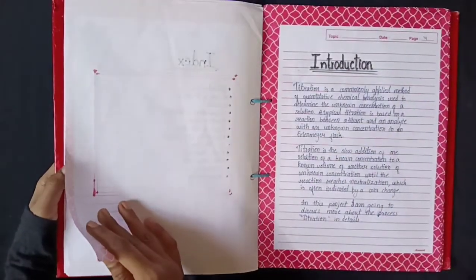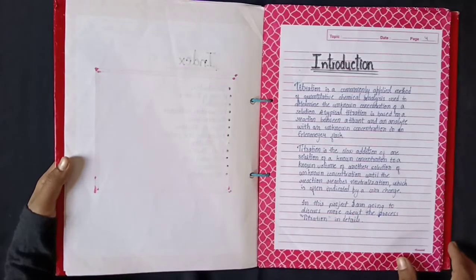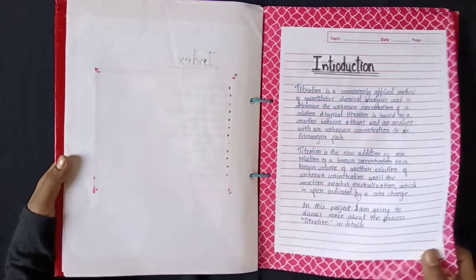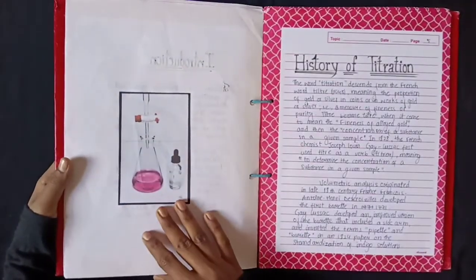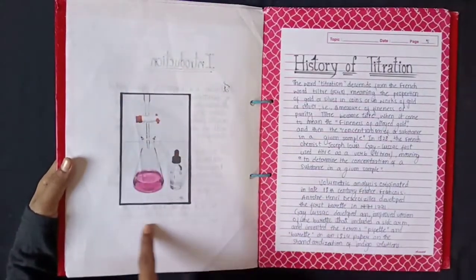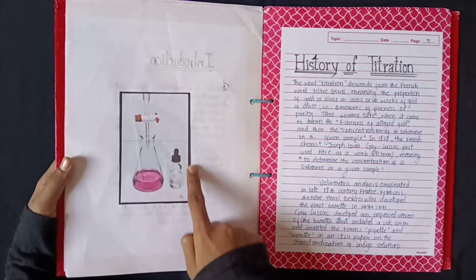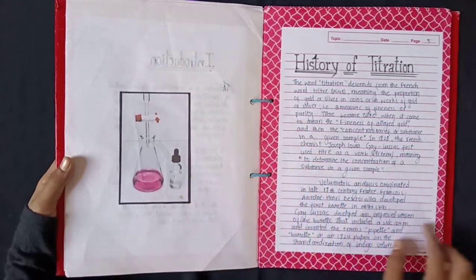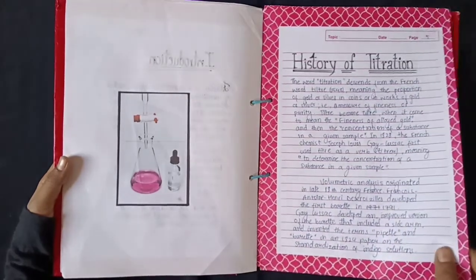And then it's introduction. I have introduced the project over here. Then it's the history of titration. I have pasted a picture over here and surrounded it with a black border, so it gives an attractive look to the project.